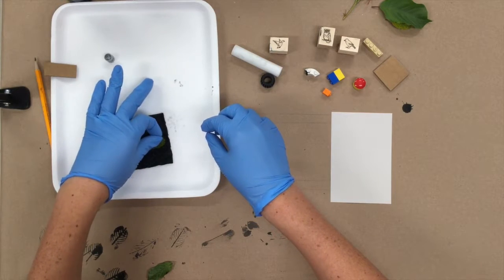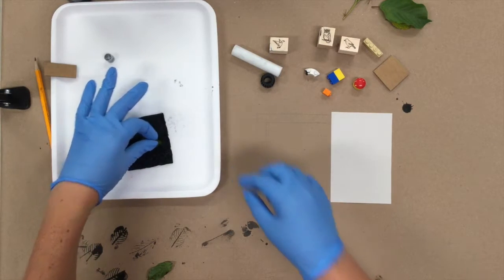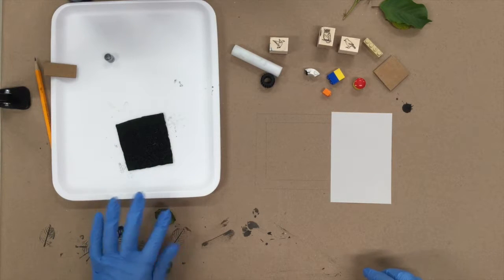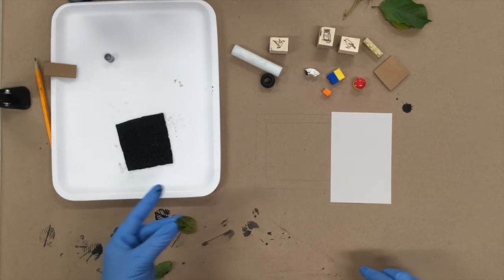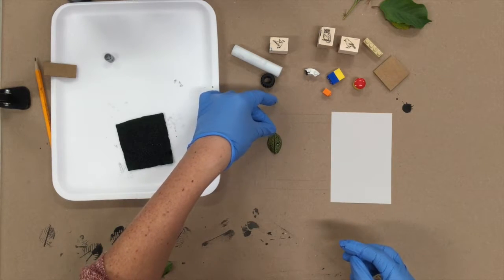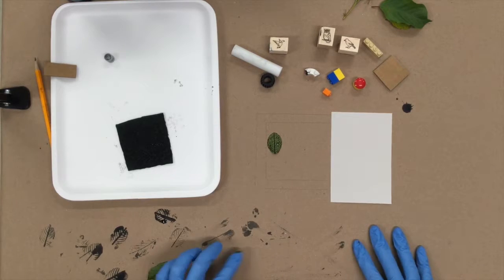I'm going to start with a leaf because of all the things I'm using they're sort of the trickiest. So I put the leaf on my little homemade ink pad, I'm dabbing some of the extra ink off on the table, and then I'm actually going to lay the leaf with the inked side facing up.